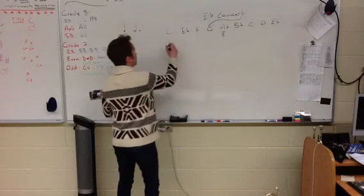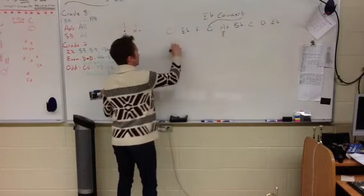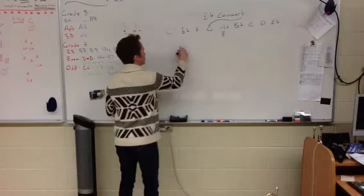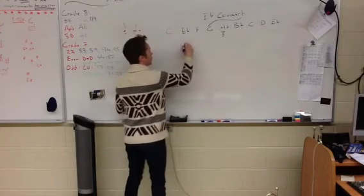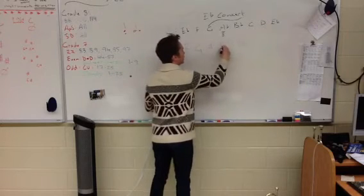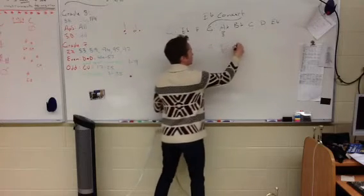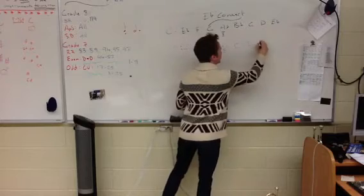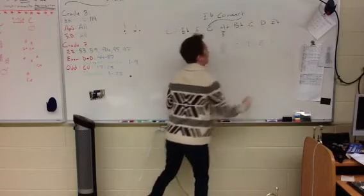Now, B flat instruments. Our notes start on F, and we have F, G, A, B flat, C, D, E, F.